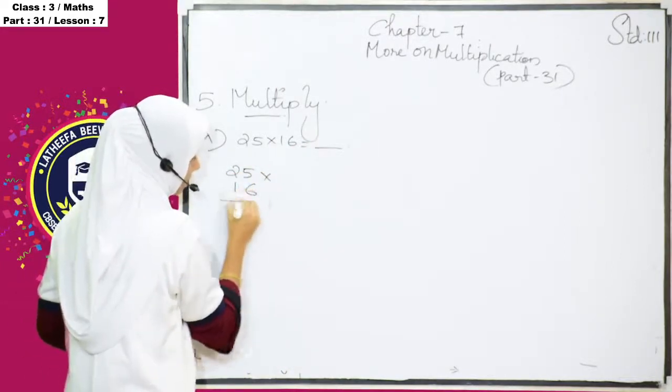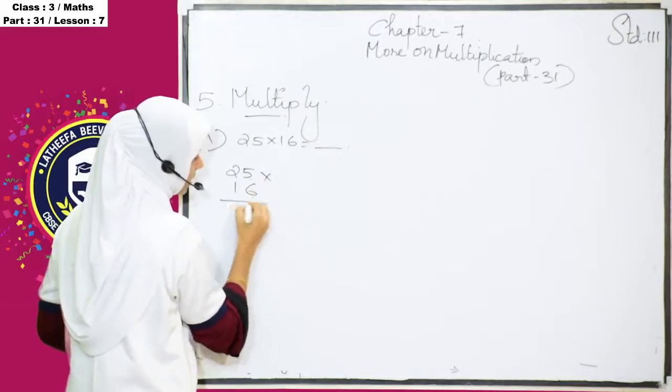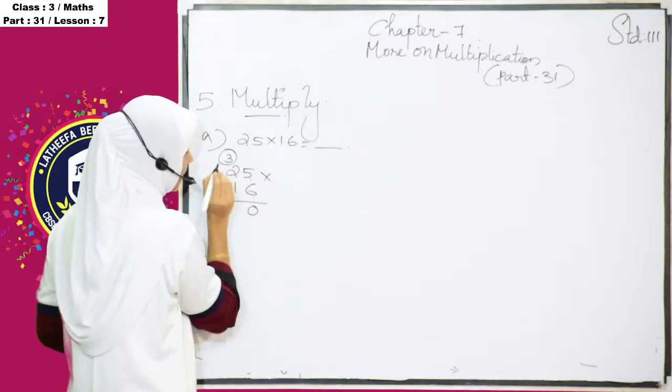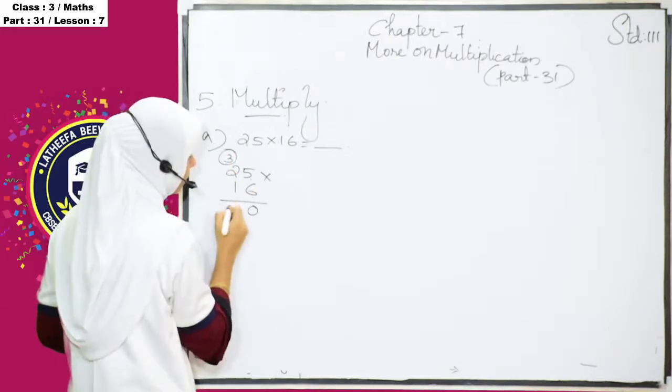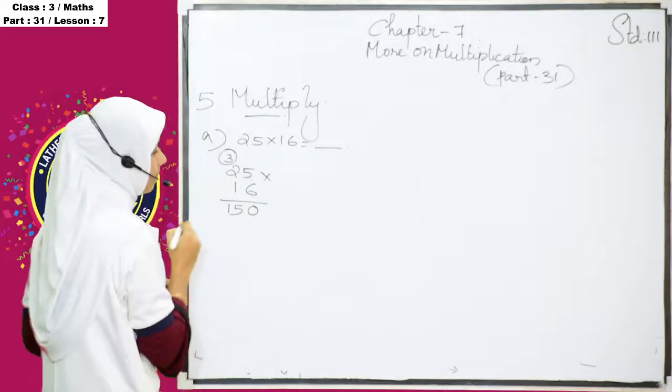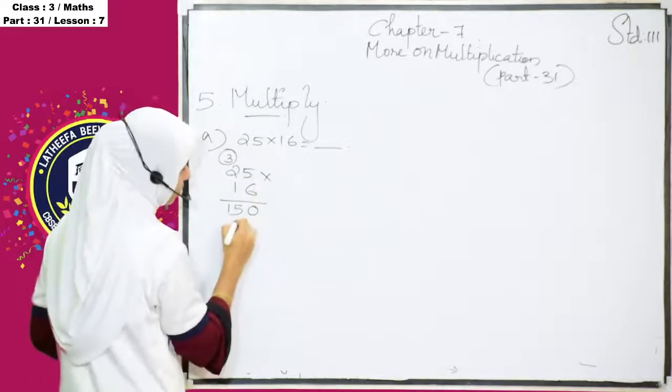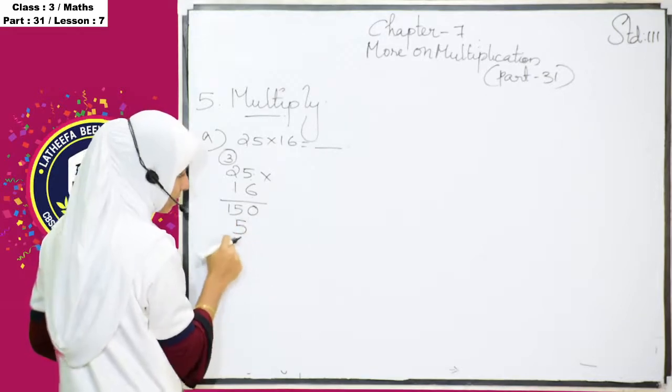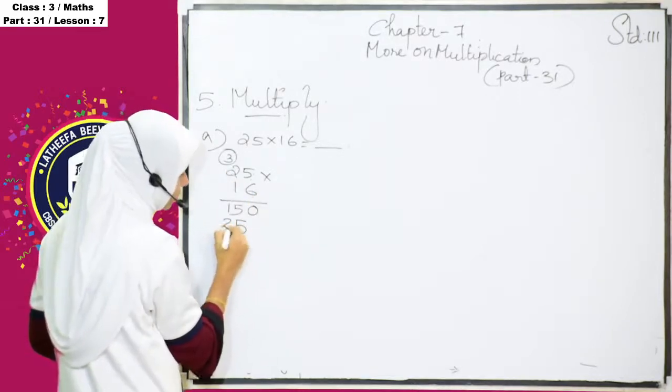25 into 16 is done. 6, 5's are 30, 0 here, 3 is carry over. 6, 2's are 12, plus 3, 13, 14, 15. So, 15 is here, then 1, 5's are 5, we have to write in the tens place of this number. 1, 2's are 2.